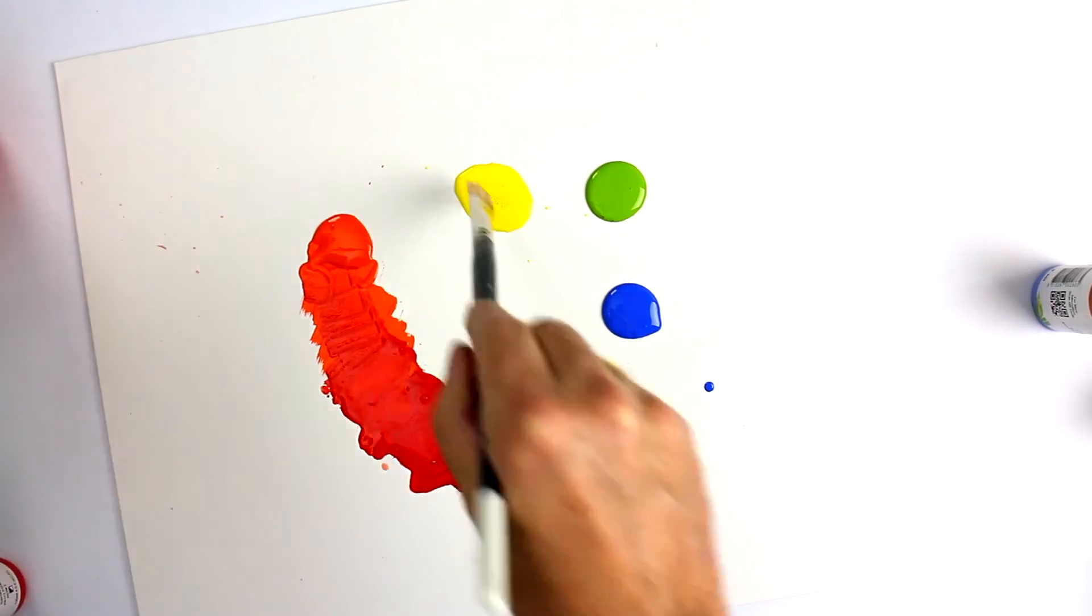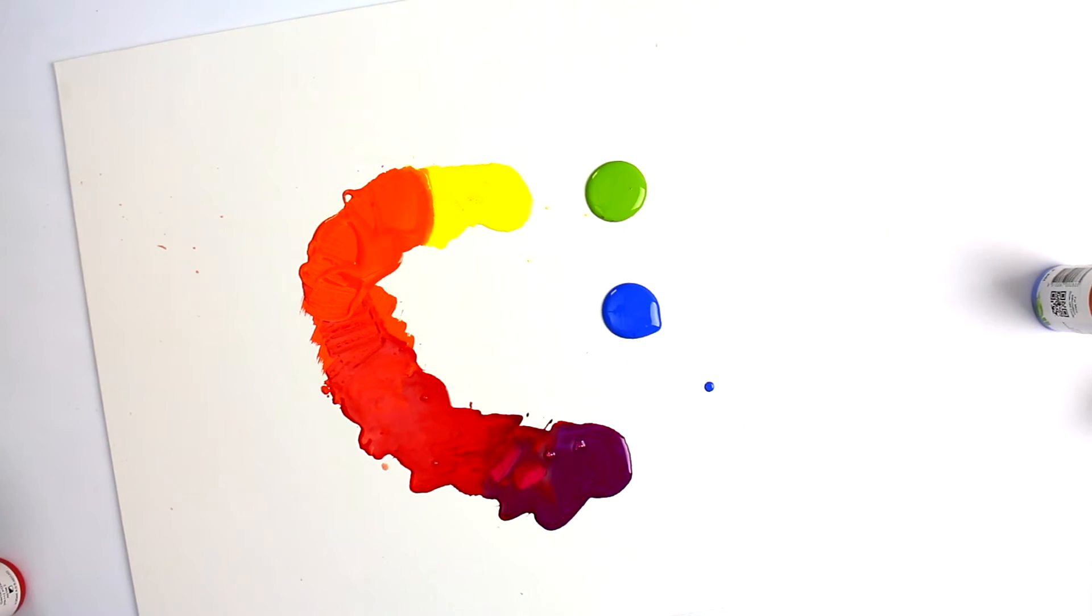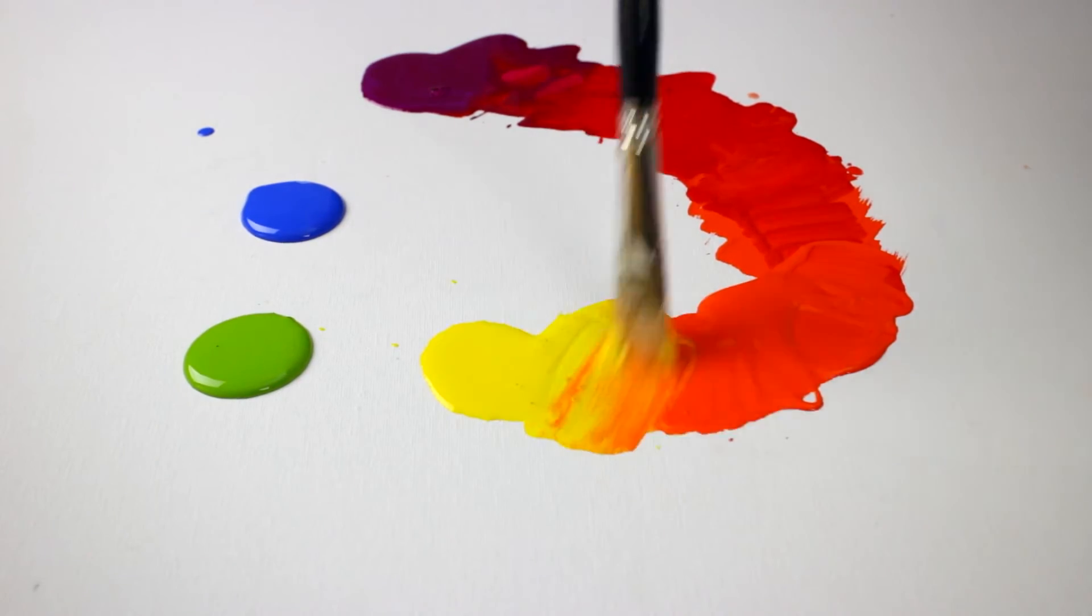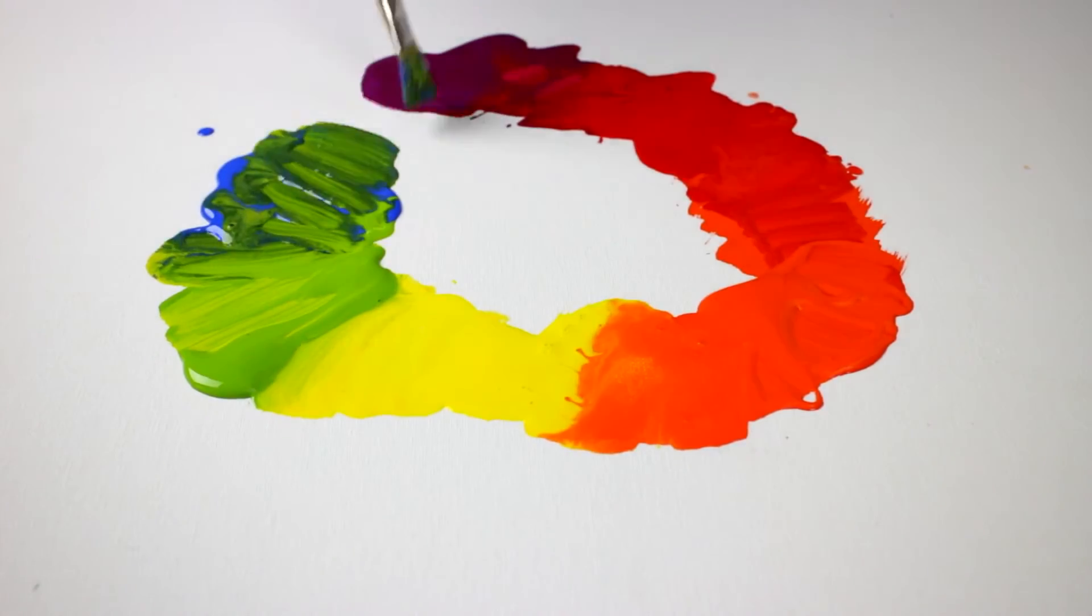So we can get a richer red, a richer orange, a more orangey yellow, a yellowy green, a bluey green.